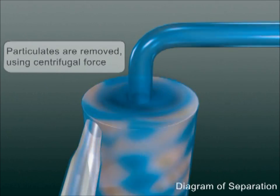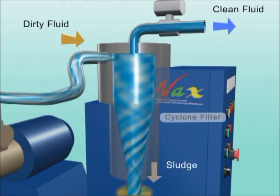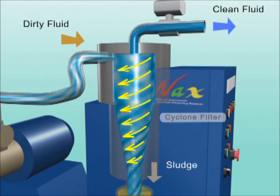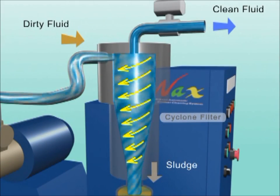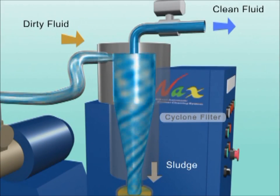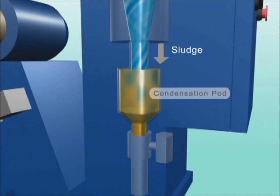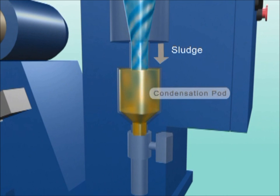The sludge that has been carried to the outer side is gradually precipitated downward due to gravity. The precipitated sludge is accumulated in the condensation pod.